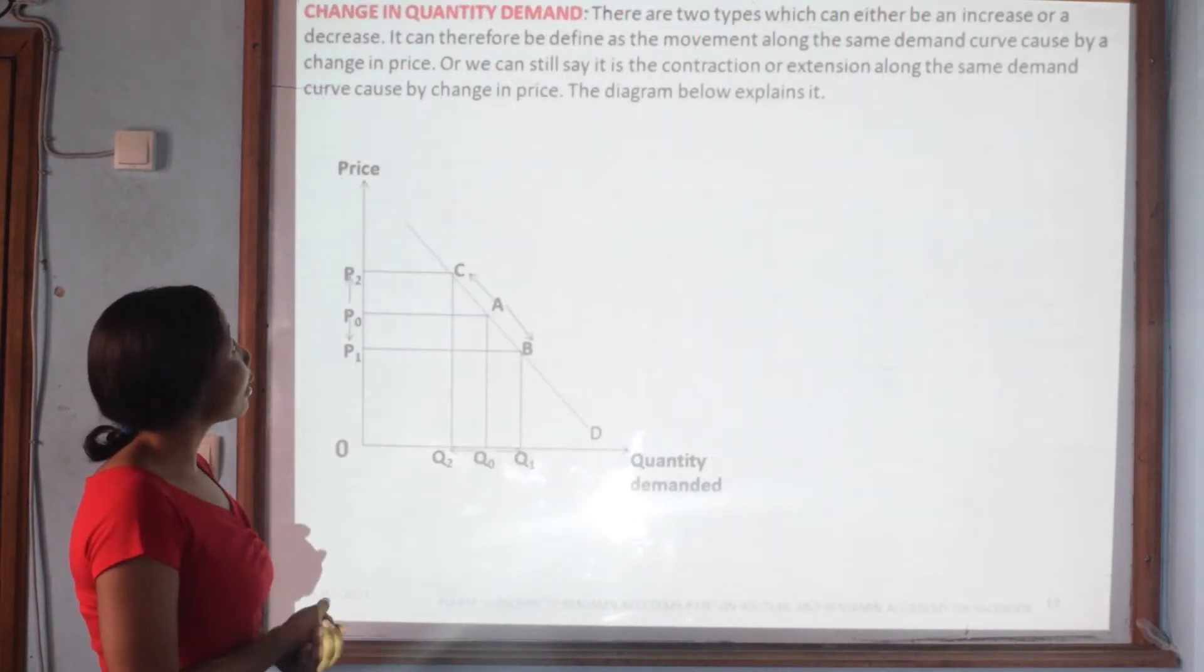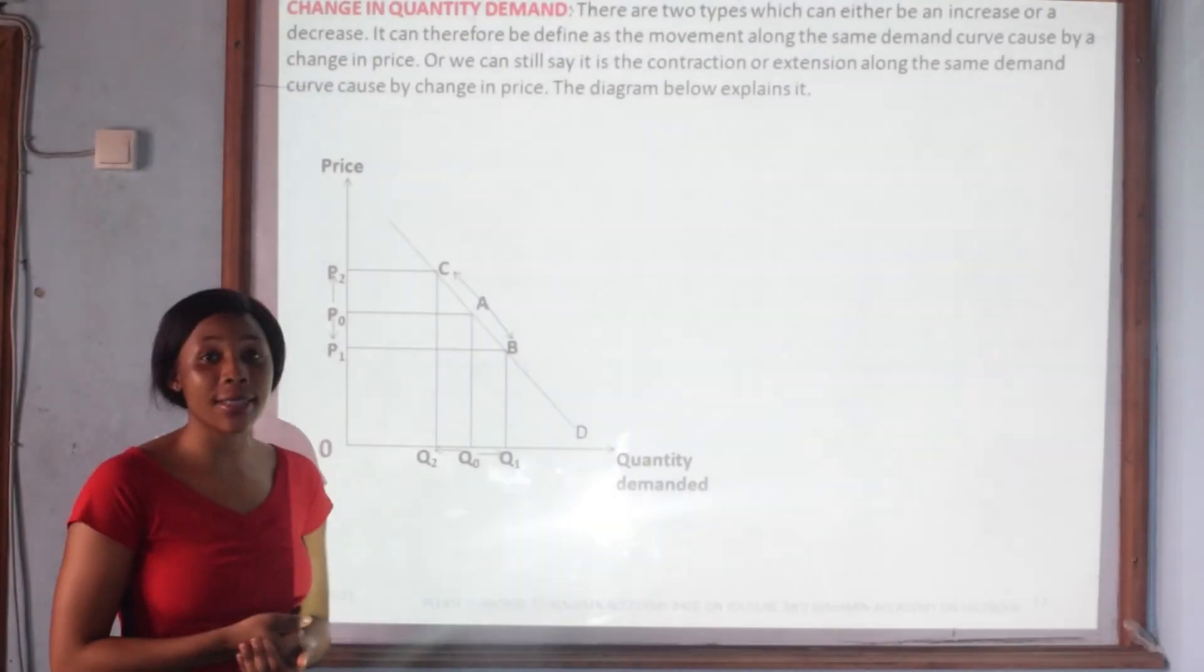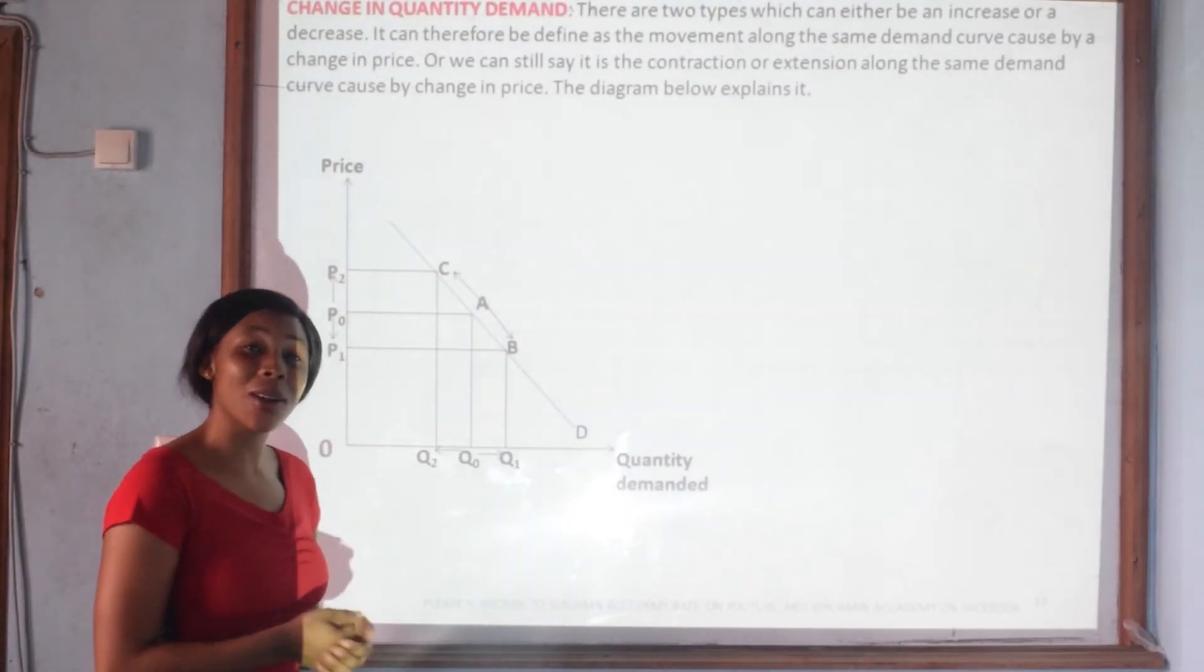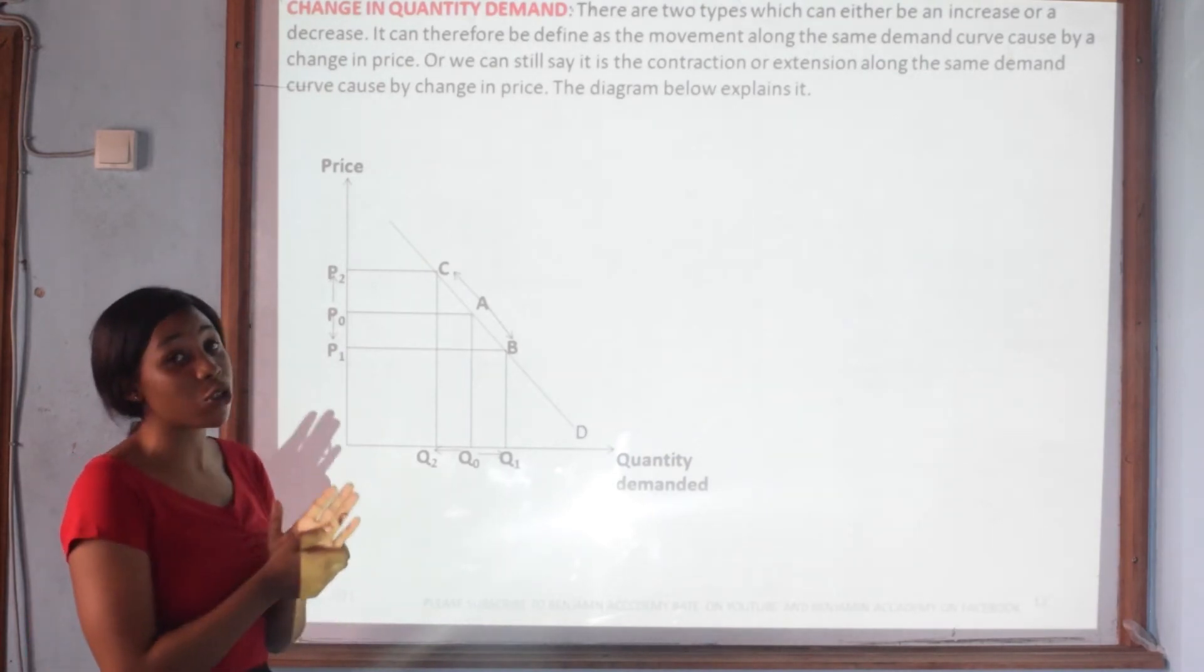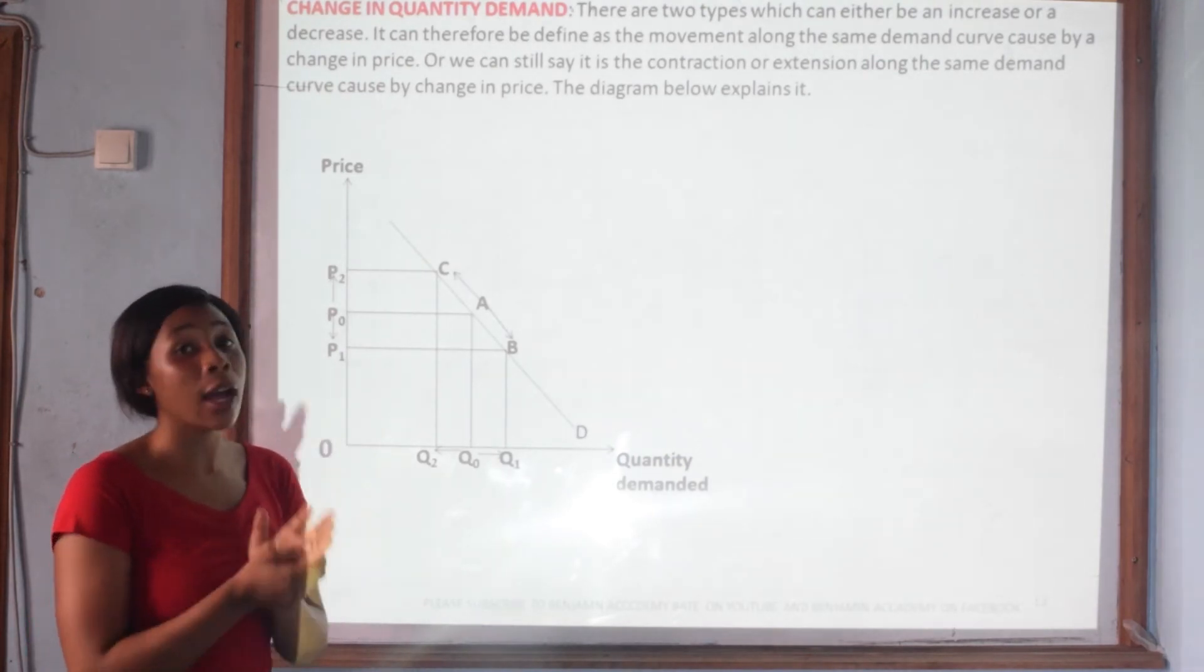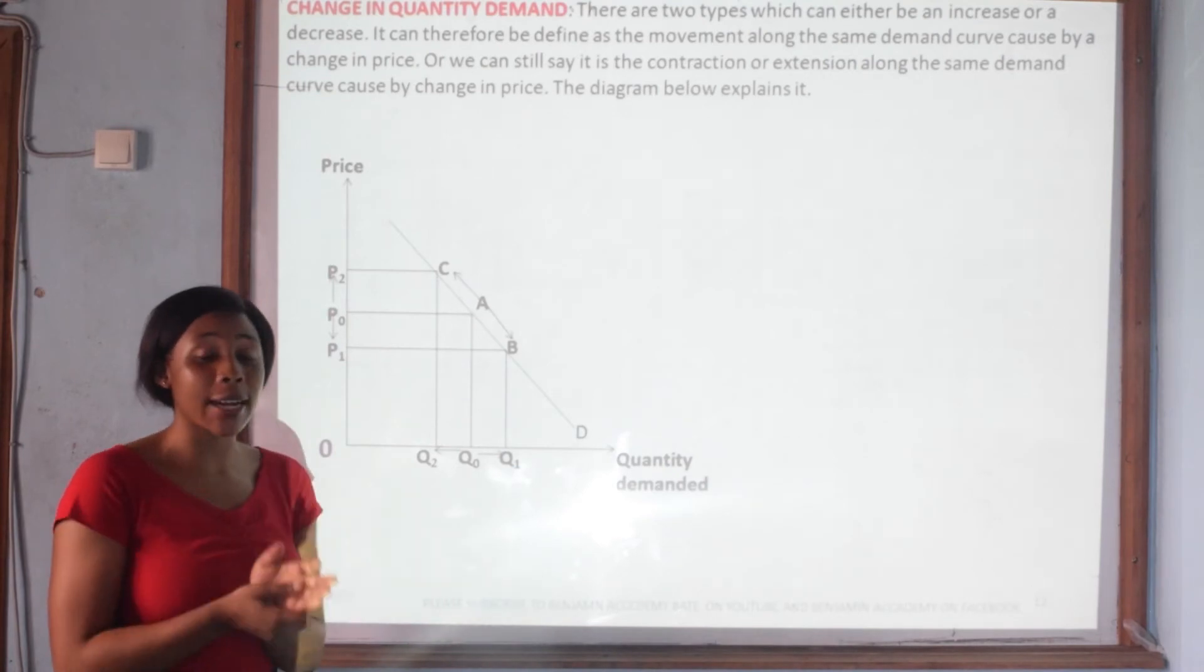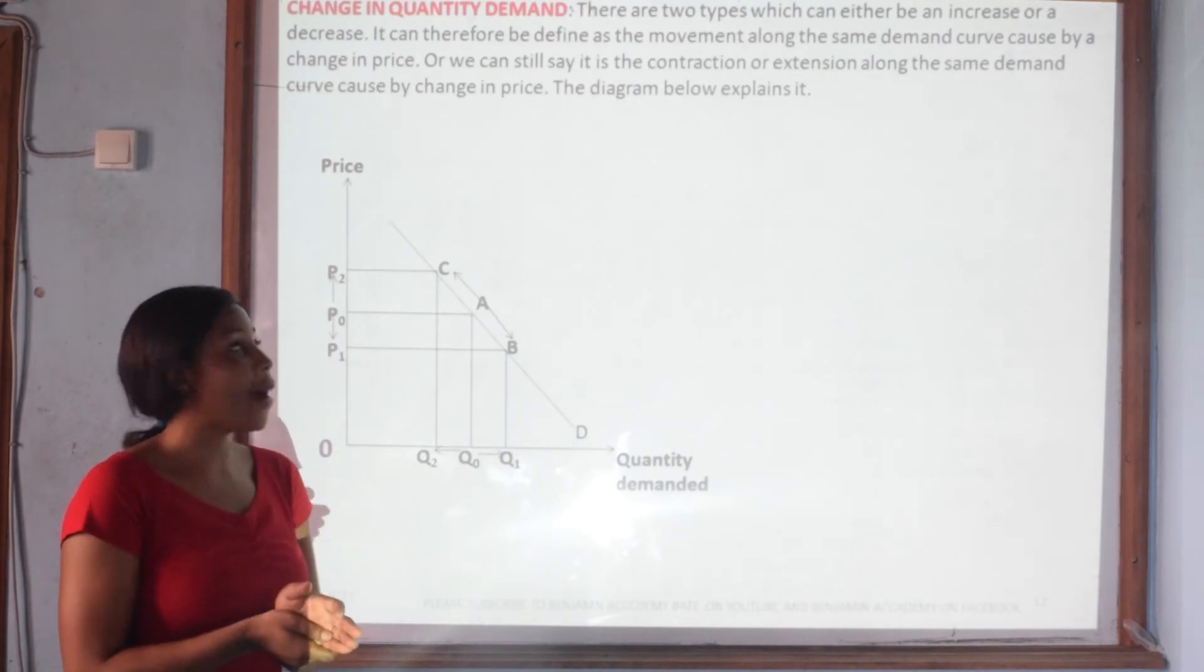Now we will be taking further to a change in quantity demanded. A change in quantity demanded is a movement along the same demand curve, upward or downward, indicating a contraction or extension in demand caused by price, while the other factors that influence demand are held constant.